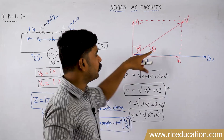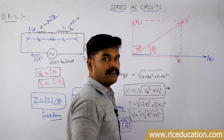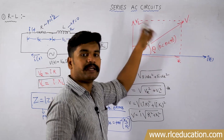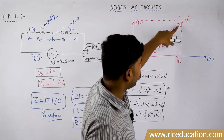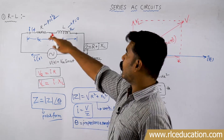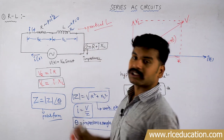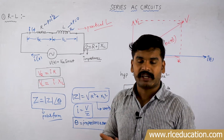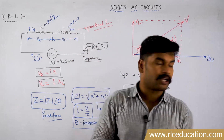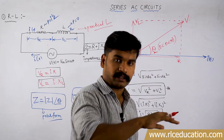In an RL circuit, theta is greater than 0 degrees but less than 90 degrees — so it varies between 0 and 90 degrees. Current is lagging the voltage by some angle theta. This means the combination of R and L behaves like an inductive circuit. This also represents the practical case of an inductor: a pure inductor gives exactly 90 degrees displacement, but a practical inductor gives something less than 90 degrees — yet current still lags voltage.